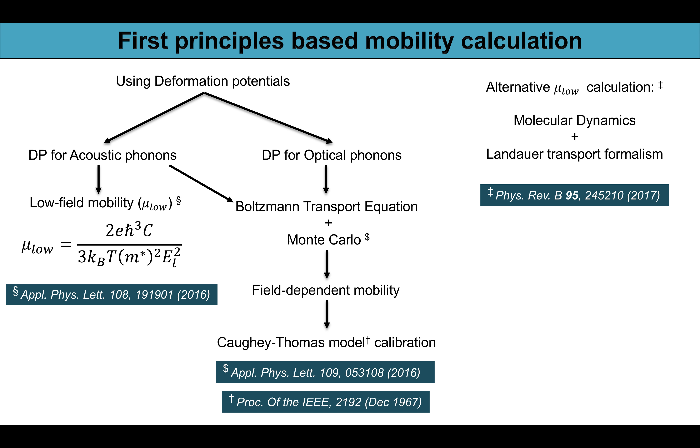Although in this work the mobility value of MoS2 was taken from a reference, one can calculate it from the first principle based methods. The most important parameter in this regard is the deformation potential. One can obtain the low field mobility from the knowledge of the deformation potential of the acoustic phonons.